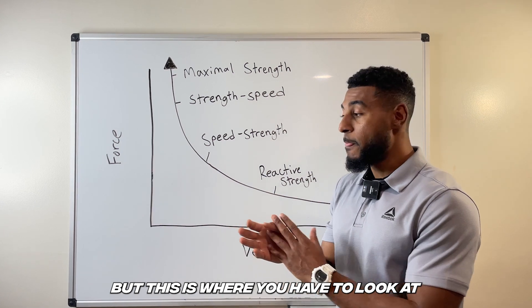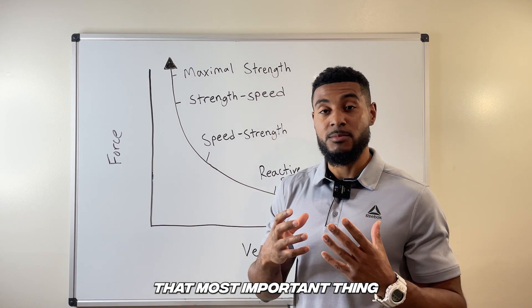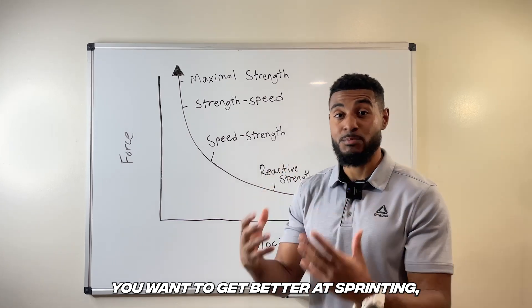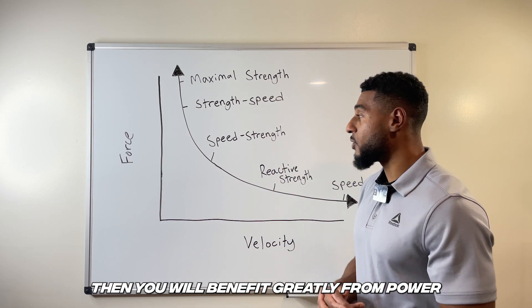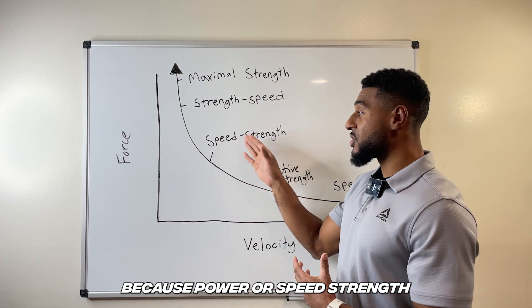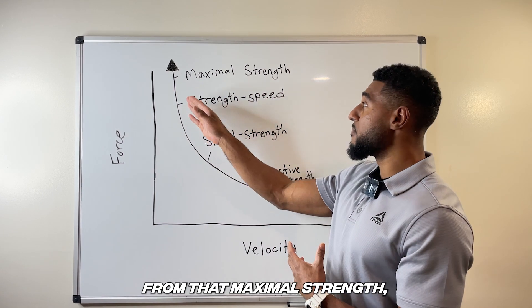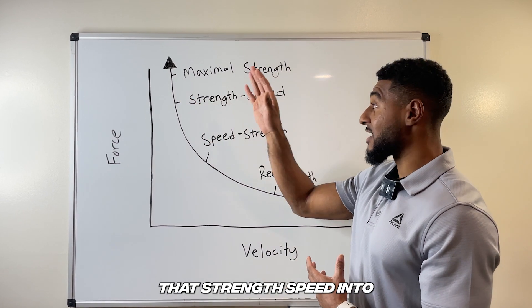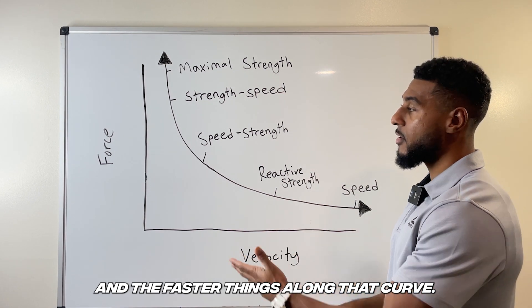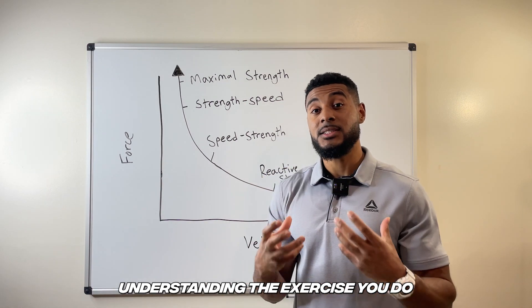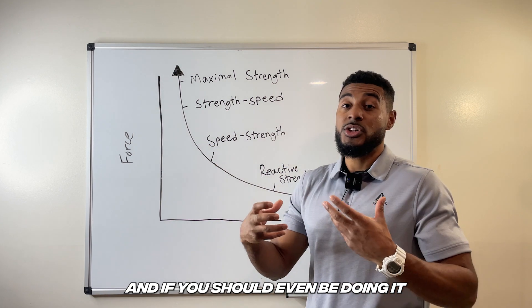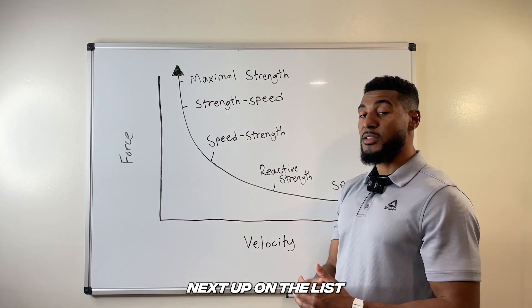This is where you have to look at what is going to be most important for reaching your goals. If you want to get better at sprinting, you will benefit greatly from power, because power or speed-strength is going to be that bridge from maximal strength and strength-speed into the more reactive and faster things along that curve. Understanding the exercise you do and where it falls along this curve — and whether you should even be doing it in relation to your goals — is key.